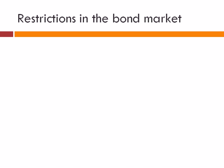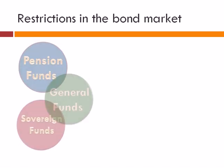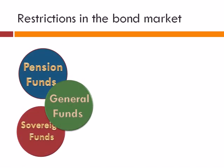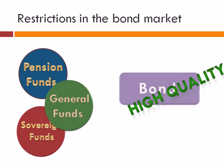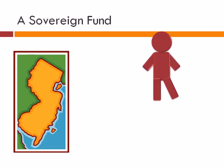Here was the issue. As discussed previously regarding credit rating agencies, there was a limitation on the bond market for certain types of funds. Funds like pension funds, sovereign funds, or general funds could only invest in debt products that had low risk, meaning the only type of debt they could buy had to be high quality or rated triple-A.